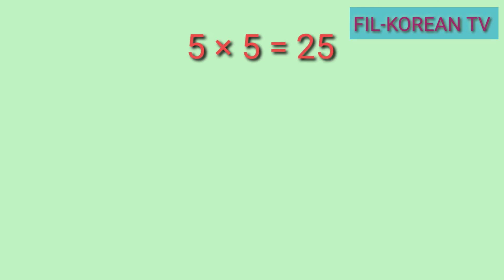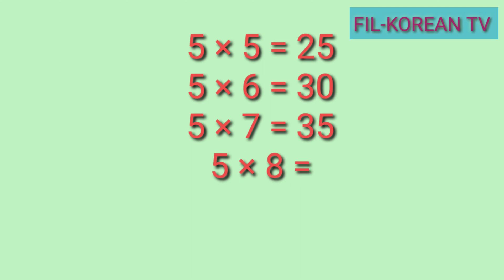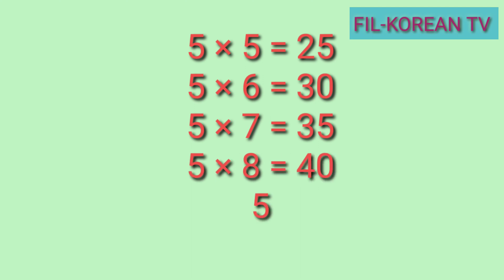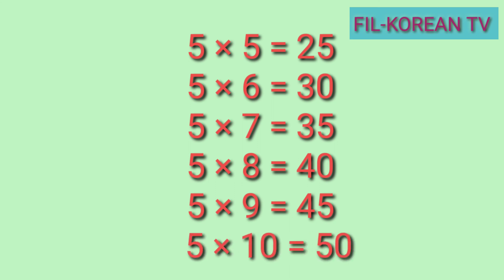Table 5. 5 x 5 equals 25. 5 x 6 equals 30. 5 x 7 equals 35. 5 x 8 equals 40. 5 x 9 equals 45. 5 x 10 equals 50.